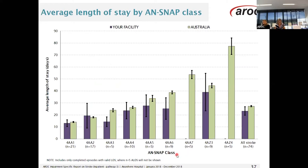This bar chart shows your average length of stay by ANSNAP class for both your facility in purple and Australia in light green. Your service's episodes are shown in brackets, with a total of 74 stroke episodes. There is no bar shown for ANSNAP class 4AA7 and 4AZ4 because your volume was less than five episodes. The black lines on the graphs are called 95% confidence interval whiskers and they indicate the variation in data around the averages. These whiskers will be wide where the number of episodes are small and quite narrow where the numbers are large, such as in the national data.